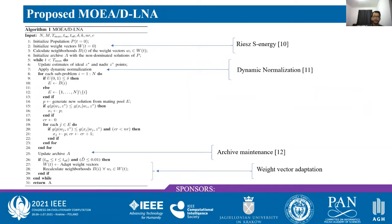Our proposed method is called Multi-Objective Evolutionary Algorithm Based on Decomposition with Local Neighborhood-Based Adaptation, or MOEA/D-LNA for short. It is a decomposition-based algorithm that uses the framework of the MOEA/D-Z algorithm with some improvements and the proposed weight vector adaptation procedure. We utilized the RIS-S-Energy initialization of weight vectors, dynamic normalization to handle ideal and nadir points, an archive and archiving maintenance methods, and finally the update of weight vectors triggered by an improvement metric.